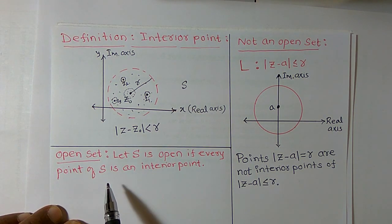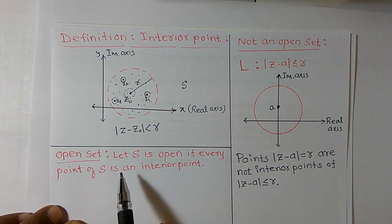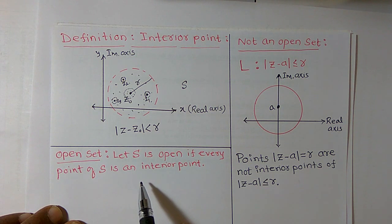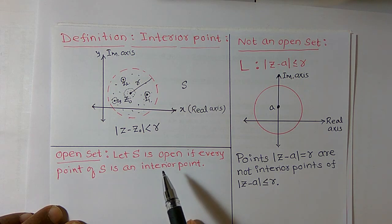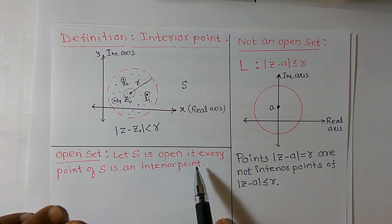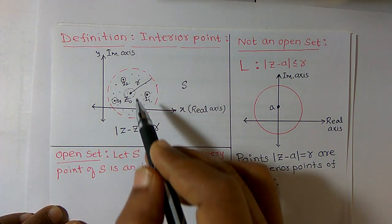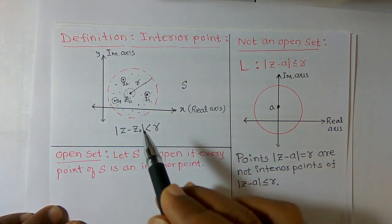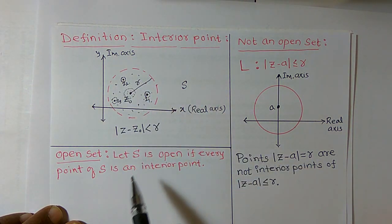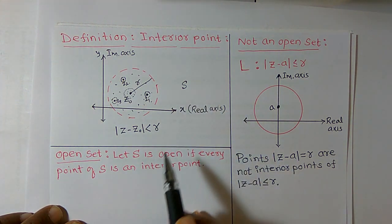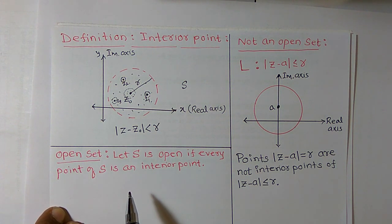Now I want to define an open set. We say s is open if every point of s is an interior point. To repeat: s is open if every point of s is an interior point. If you consider many points and all those points belong to s and are interior points, then s is called an open set.